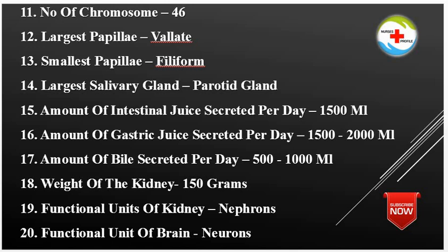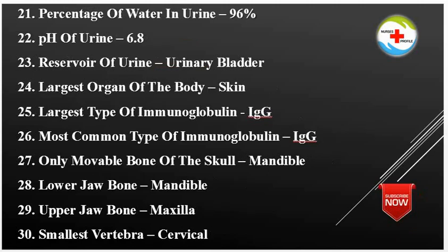Functional Unit of the Brain: Neurons. Percentage of Water in Urine: 96%. pH of Urine: 6.8. Reservoir of Urine: Urinary Bladder. Largest Organ of the Body: Skin.